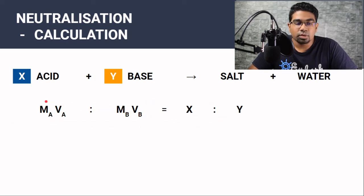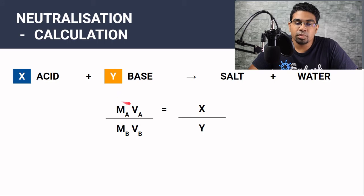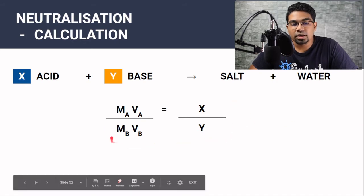And this is what we are left with. This is a ratio. MAVA to MBVB is equals to X to Y. And since both sides are ratios, we can write them in the fraction form. So we have MAVA over MBVB is equals to X over Y. And this is the formula that we will use for calculations in titration.